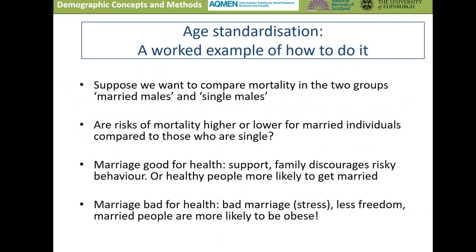That's the general idea of age standardization, and I'll go through a worked example to show how this works in practice. The example I'm going to look at is comparing mortality in two groups: married males and single males. I'm interested in finding out whether risks of mortality are higher or lower for married individuals compared to those who are single. We might think marriage is good for health — providing support from a partner and a family that could discourage risky behaviour. Or causality could run in the other direction: people who are healthy and predisposed to a long life may be more likely to get married. Marriage could also be bad for health if stressful, or some researchers have connected marriage to things like obesity.